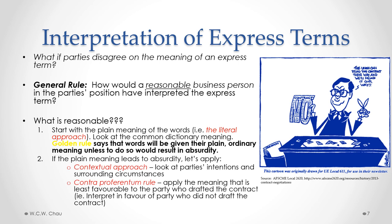These other interpretive approaches are: first, the contextual approach, where we look beyond just the dictionary definition. We look at the actual parties' intentions and the surrounding circumstances to determine what the parties intended these words to mean. A third approach is called the Contra Proferentum Rule, which says that we apply the meaning of the word or phrase that is least favorable to the party who drafted the contract — in other words, we interpret the words in favor of the party who did not draft the contract. We consider the literal, contextual, and Contra Proferentum approaches, and return to the question: how would a reasonable business person in the party's position have interpreted the express term?